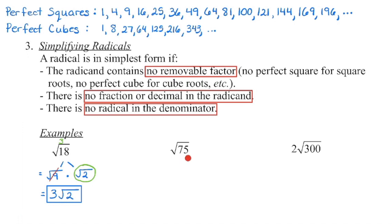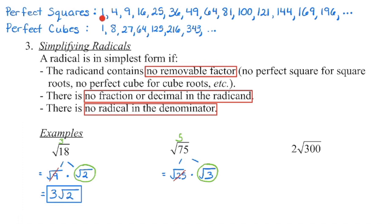Now we're going to simplify the square root of 75. I can see 75 is between 64 and 81, so I'm looking for the largest perfect square that will divide evenly. 64 will not divide evenly, nor will 49 or 36, but 25 will. So 75 divided by 25 is 3. The square root of 25 times the square root of 3 equals the square root of 75. I take the square root of 25, which is 5, pull that out, and multiply 5 times 1 out front to get 5. There's no more perfect square that will divide evenly into 3, so the answer is 5 times the square root of 3.